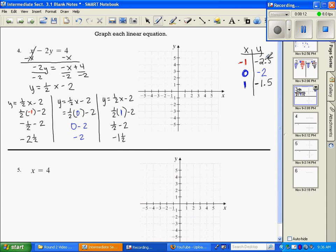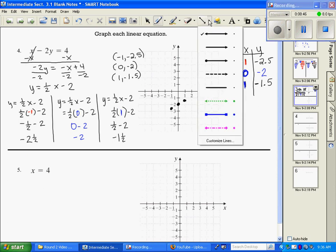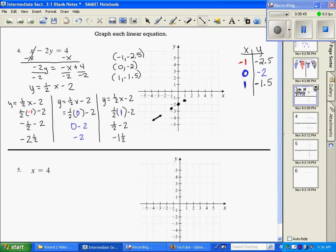Now I just want to graph these as ordered pairs. So my first ordered pair is going to be (-1, -2.5). So I'm going to go -1 on the x-axis and then down 2.5 is about right here. My second ordered pair is going to be (0, -2), which is right here. And then my third ordered pair is (1, -1.5). So if I go over 1 and then down 1.5, and you can see those are pretty much in a straight line. I'm going to get my line tool and then draw a line through these. And that's how you graph plotting points.